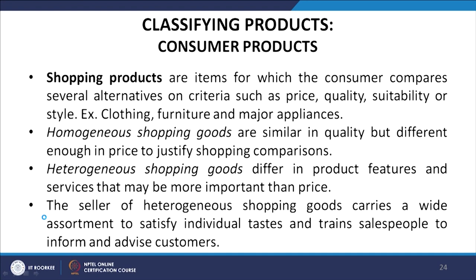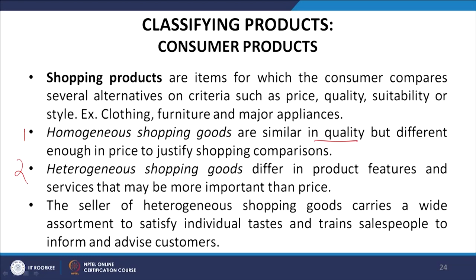Shopping products are items for which consumers compare several alternatives on criteria such as price, quality, suitability, or style — for example, clothing, furniture, and major appliances. There are two further categorizations: homogeneous shopping goods, which are similar in quality but different enough in price to justify shopping comparison, and heterogeneous shopping goods, which differ in product features and services that may be more important than price.